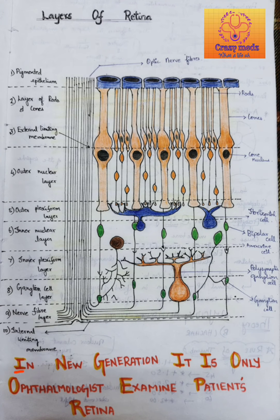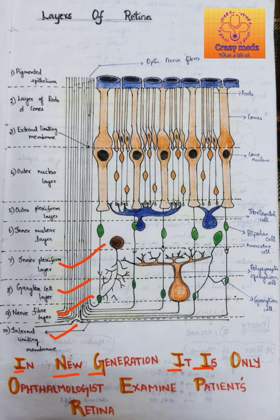'In' stands for the inner limiting membrane. 'N' in 'new' stands for the nerve fiber layer. 'G' in 'generation' stands for the ganglion cell layer. 'I' in 'it' stands for the inner plexiform layer. 'I' in 'is' stands for the inner nuclear layer.